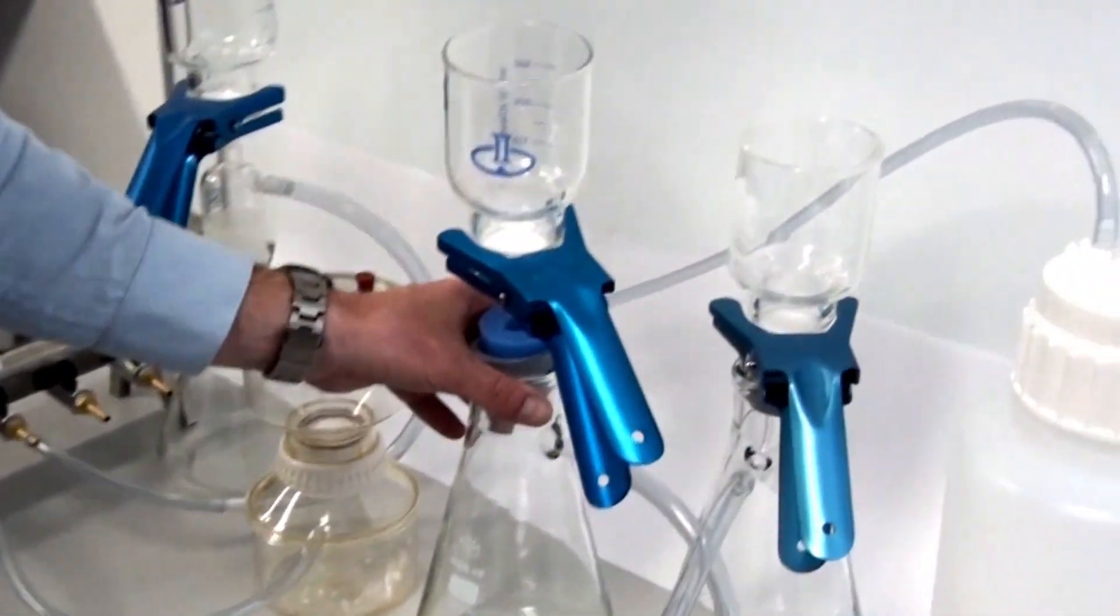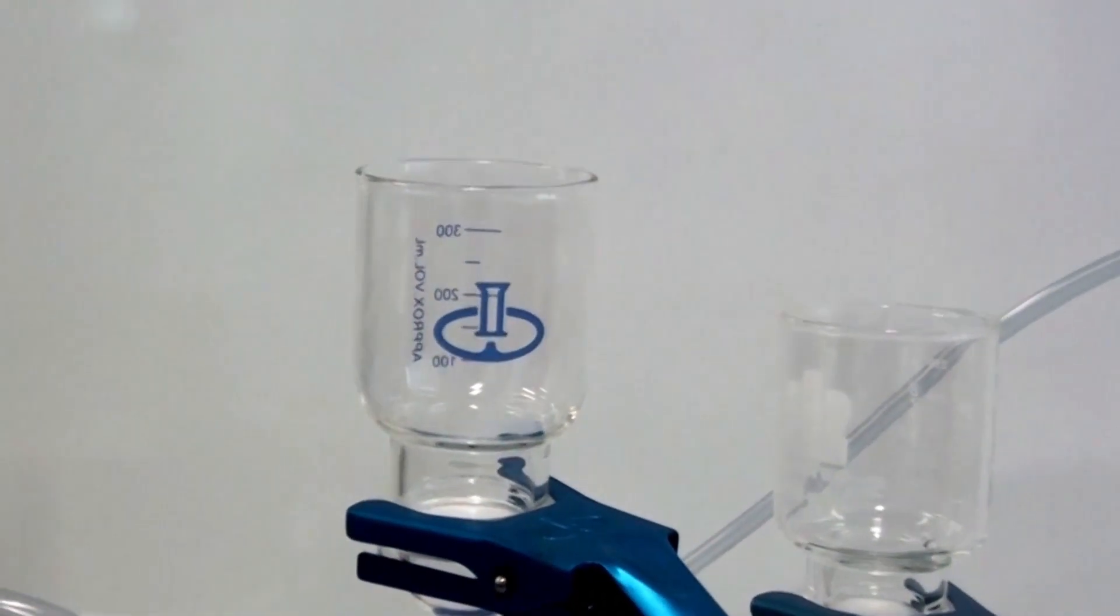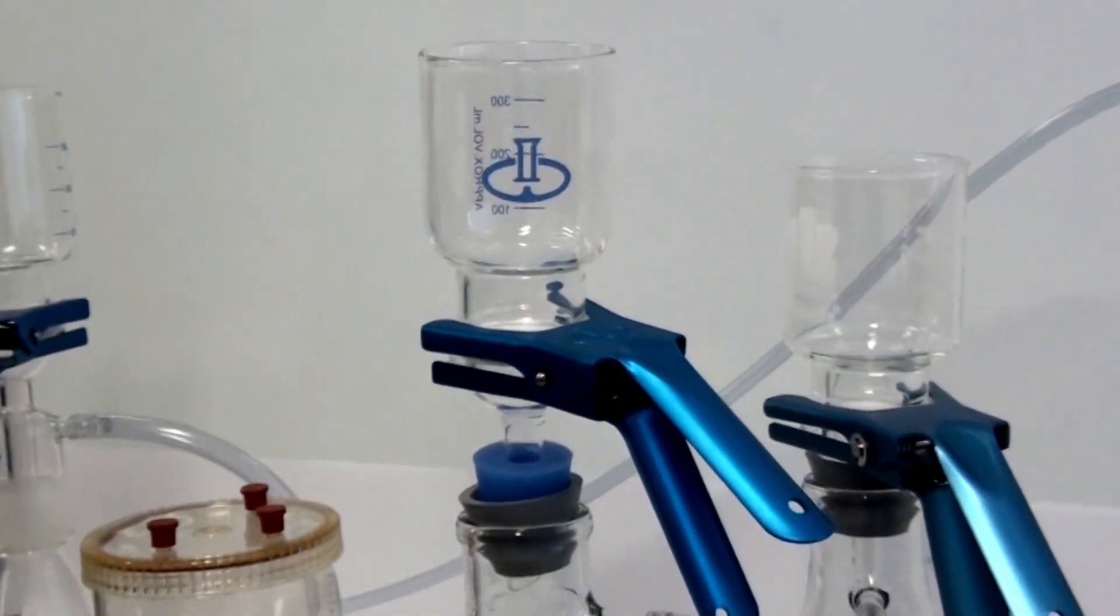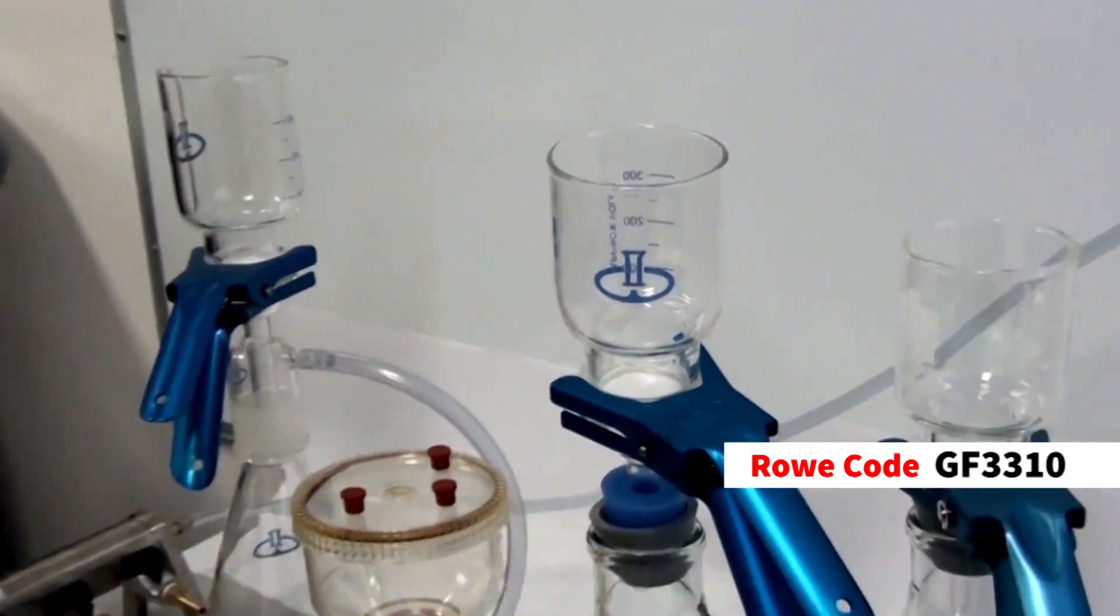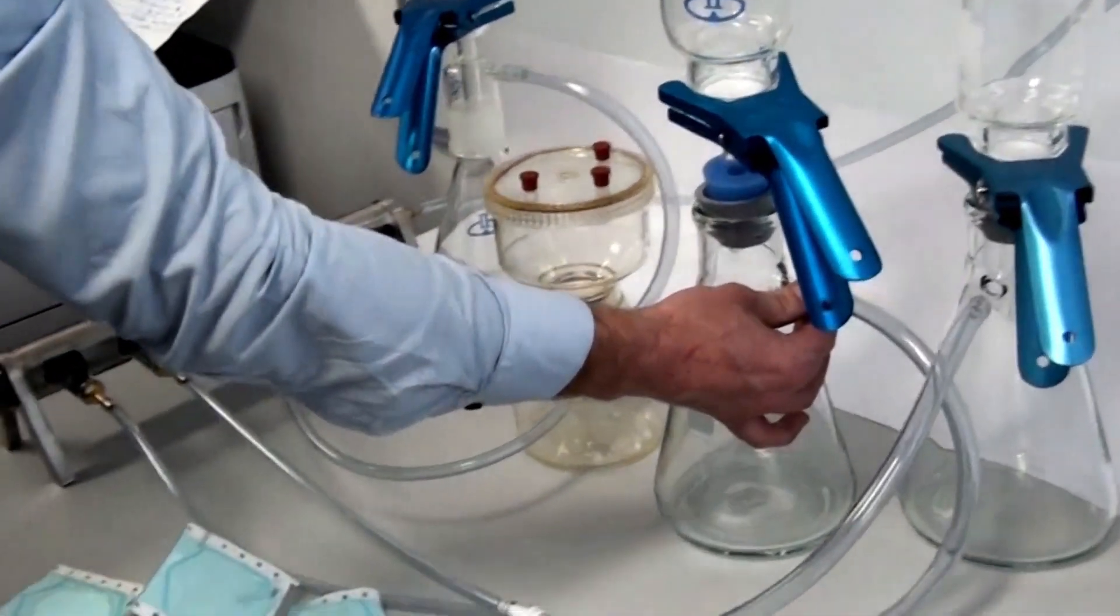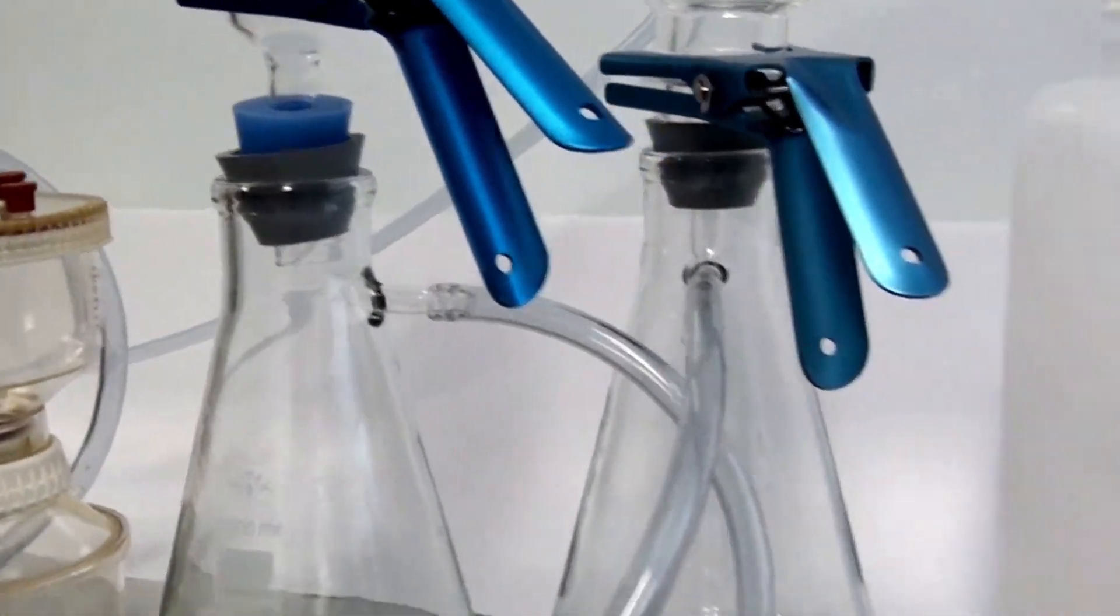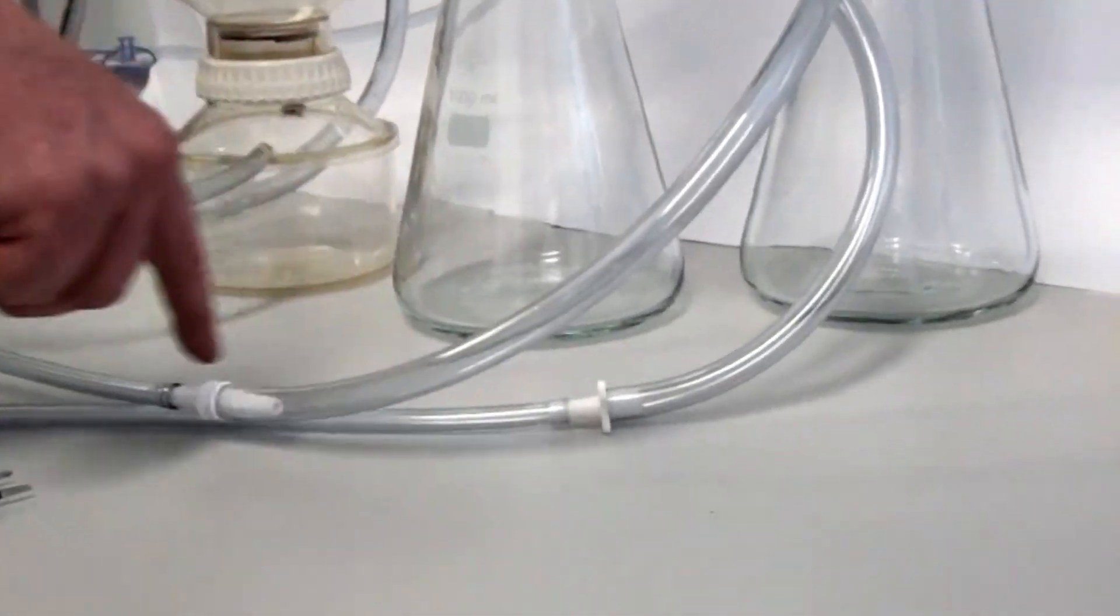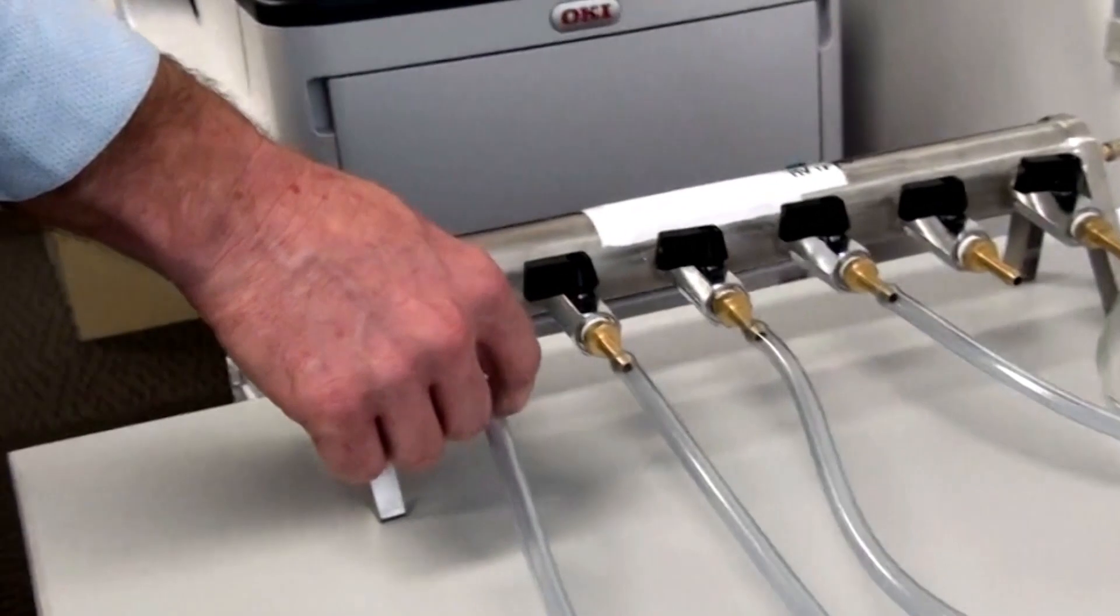Now, next on the line, we have the Synax 1.0L filter flask, which is our code GF3310. And again, that's got a 10mm side arm. So I've connected that to the PT2900 tubing through a connector through the PT2800 tubing to the manifold.